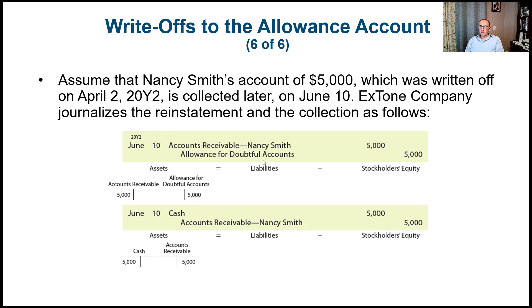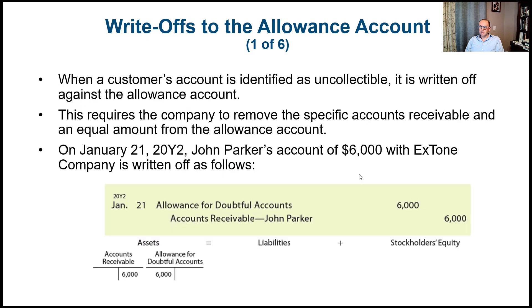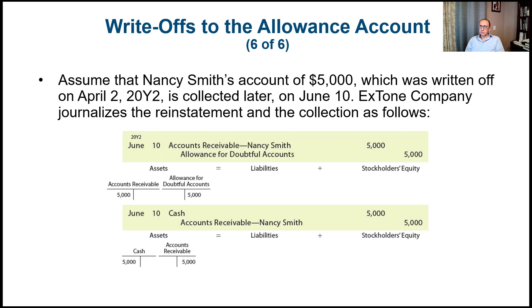On June 10th, we reverse the write-off entry by debiting accounts receivable for Nancy Smith and crediting allowance for doubtful accounts. Then we record the collection by debiting cash and crediting accounts receivable. The accounts receivable entries cancel each other out, effectively giving us a debit to cash and a credit to allowance for doubtful accounts. It's better to present this as two journal entries to clarify the reinstatement and collection process.